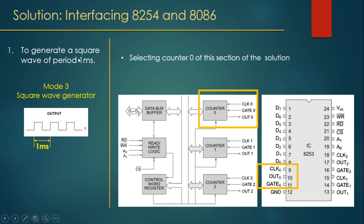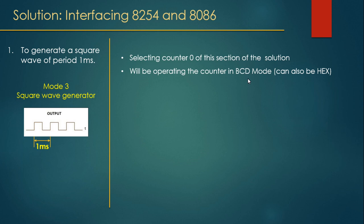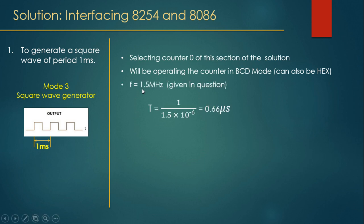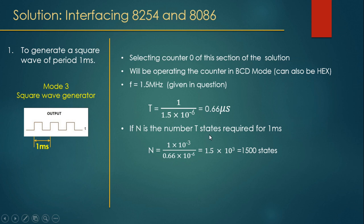Part 1: generate a square wave of period 1 millisecond using Mode 3 on counter 0, operating in BCD mode. The clock frequency is 1.5 MHz, giving a time period of 0.66 microseconds. The number of T-states N required for 1 millisecond is N = 1 ms / 0.66 µs = 1500 states.